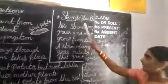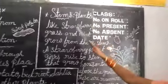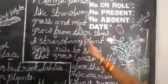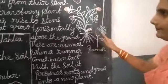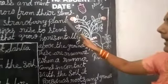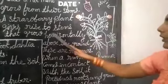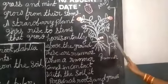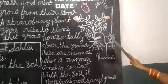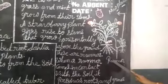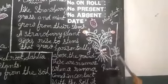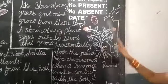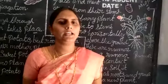Now let's learn about stems. Plants like strawberry, grass, and mint grow from their stems. This is a strawberry plant. A strawberry plant gives rise to stems that grow horizontally above the ground — these are called runners. When a runner comes in contact with the soil, it produces roots and grows into a new plant. Children, what are rhizomes? Tomorrow we will learn about rhizomes.